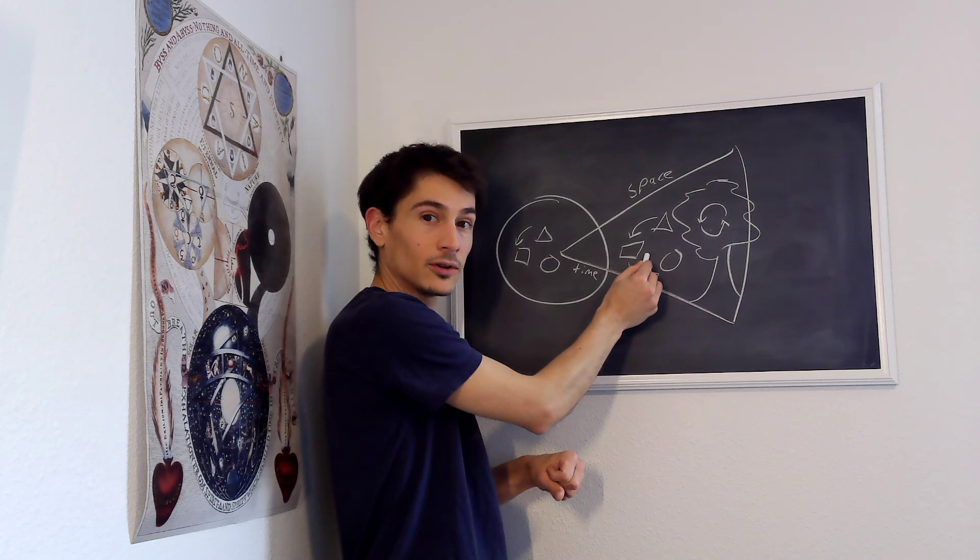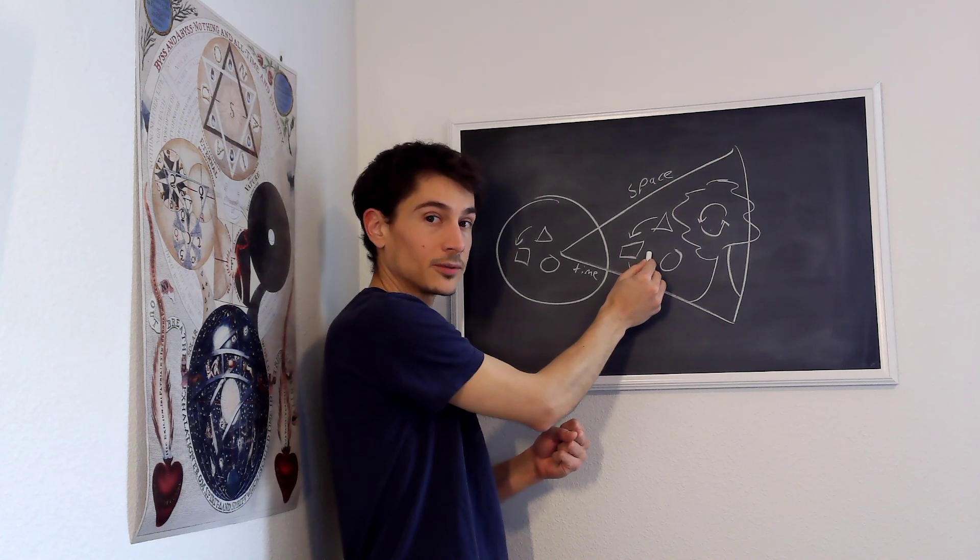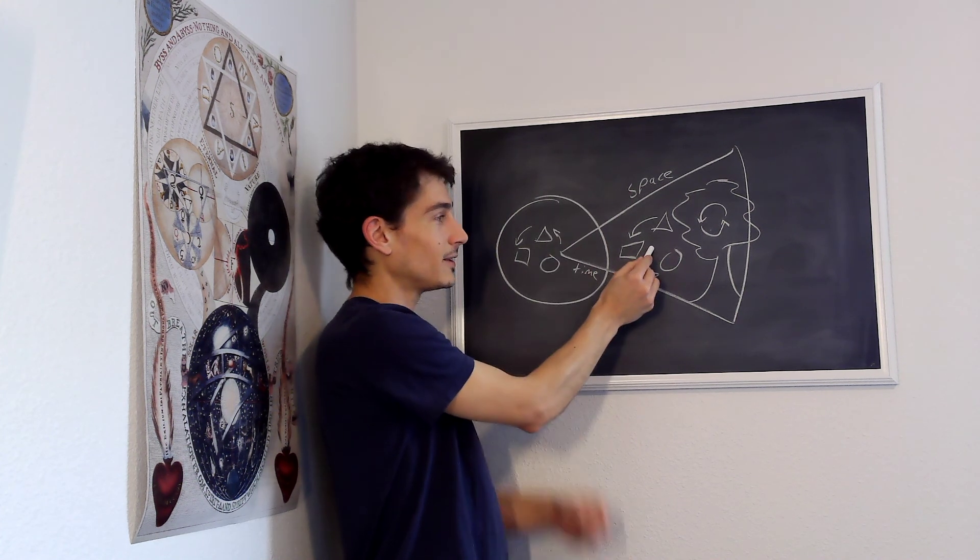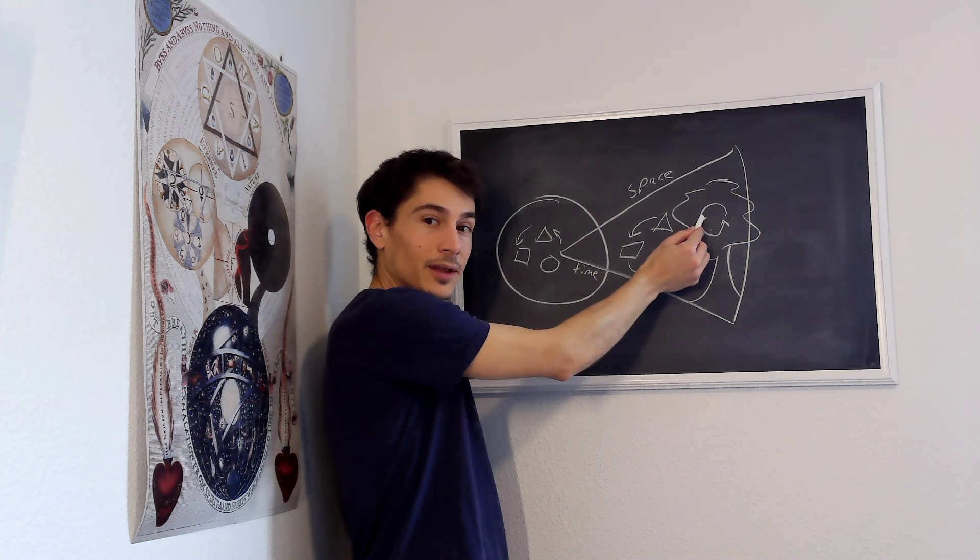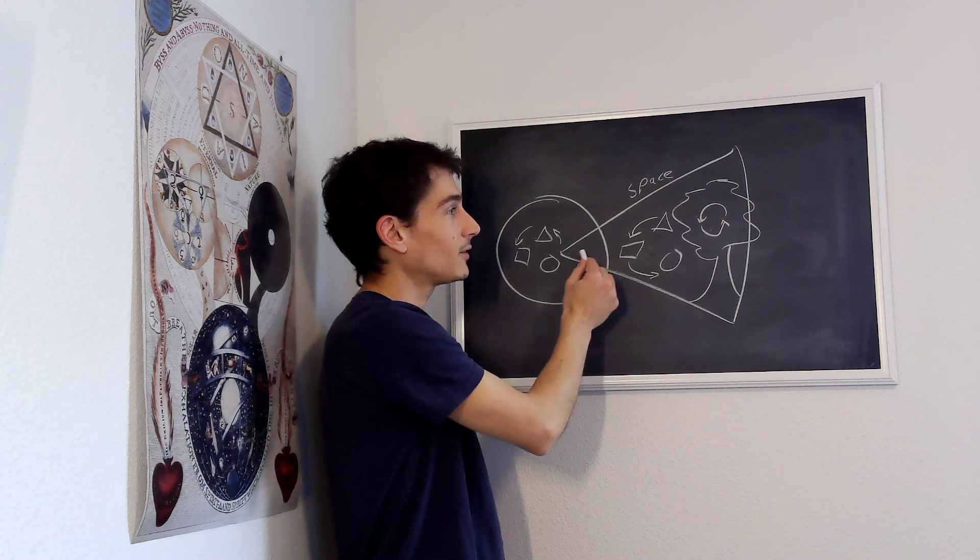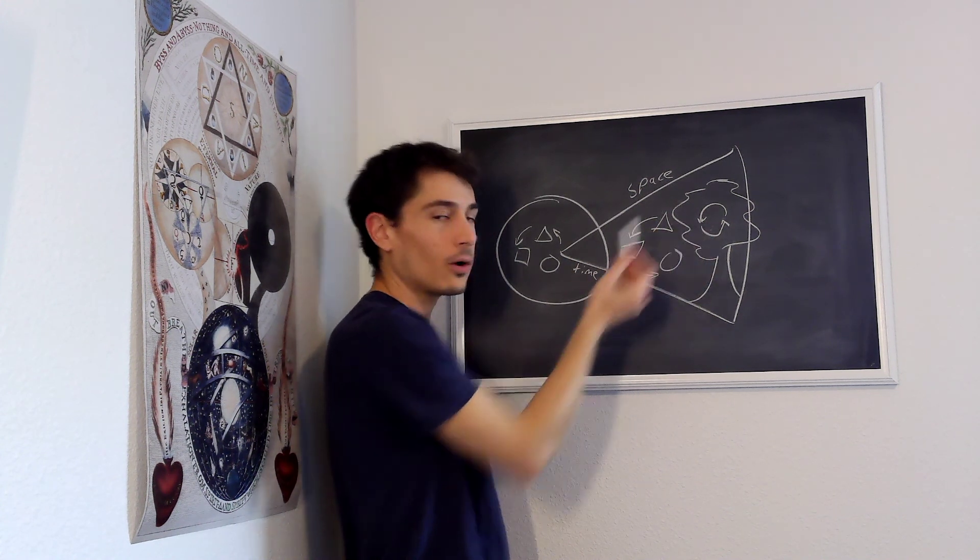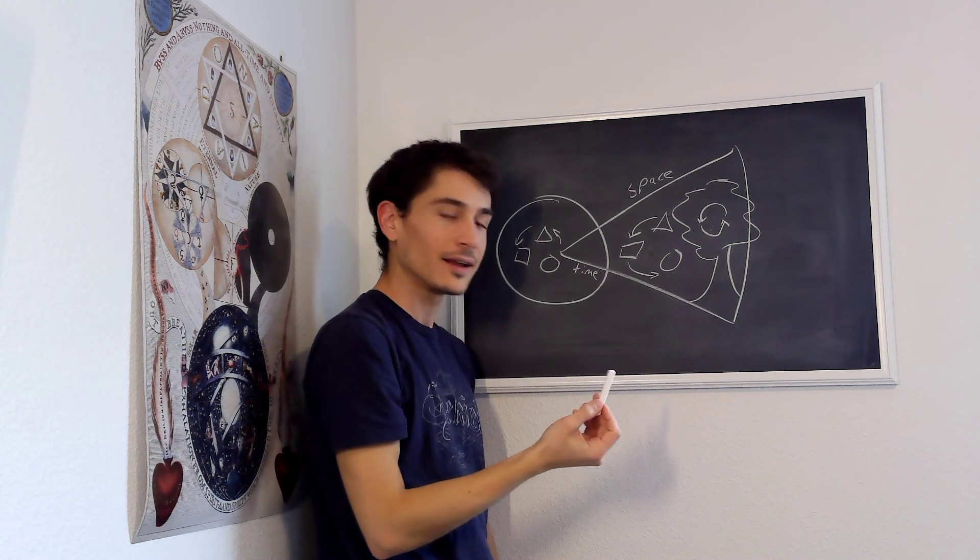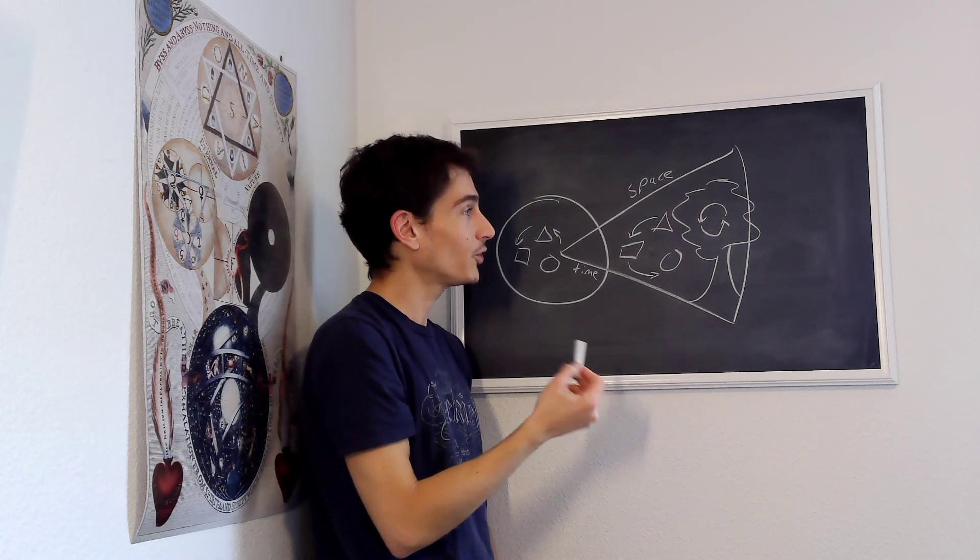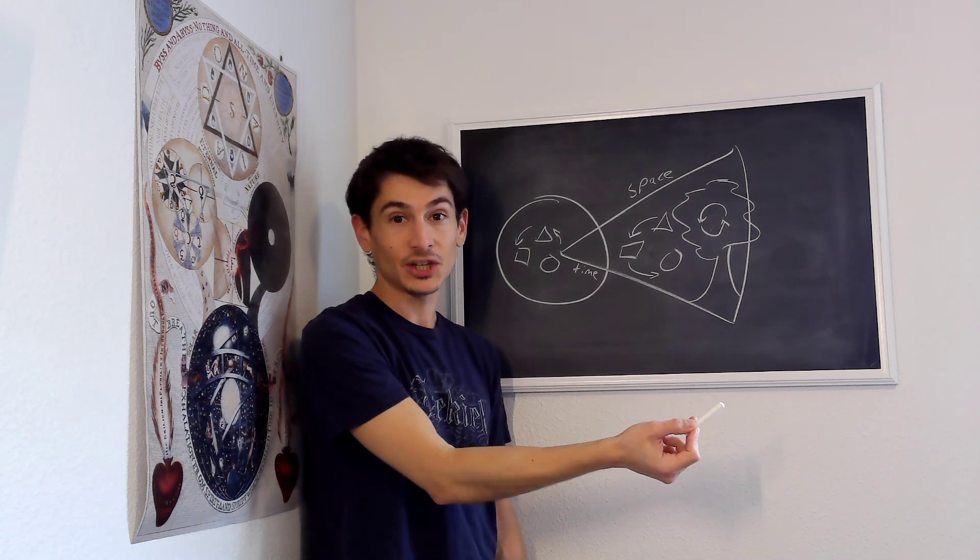Kant says we have the categories to understand this mechanical type of causality, but we don't have those same categories for this organic type of causality. Kant says that it would take a scientific form of genius to intuit the wholeness underlying the self-organizing processes of organisms in order to have any scientific knowledge of how that's done. Kant didn't think there could be such a genius.